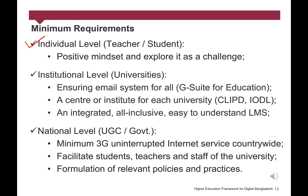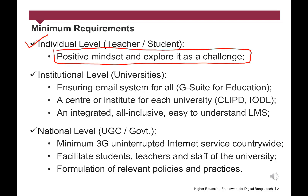At the individual level, the requirements are: university teachers and students should have a positive mindset towards online and digital education and explore it as a challenge. At the institutional level, the requirements are: ensuring institutional email for all students, teachers and staff, as well as establishment of a centre or institute for online and digital education for each university. More importantly, it should have an integrated, all-inclusive, easy-to-understand learning management system which is stable, scalable and easy to use.